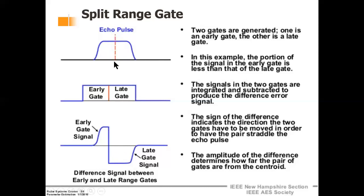Our main aim is to align the range gate with the echo pulse so the target is in track. The sign of the difference signal indicates the direction in which the range gates must be moved to align with the echo pulse. The amplitude of the difference determines how far the pair of gates is from the center of the pulse — sometimes called the centroid. If the error signal is zero, the range gates are centered on the pulse. As the gates deviate, signal energy increases in one gate and decreases in the other.